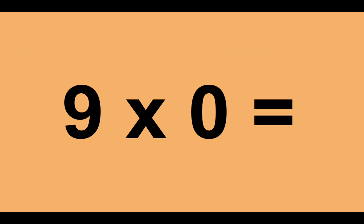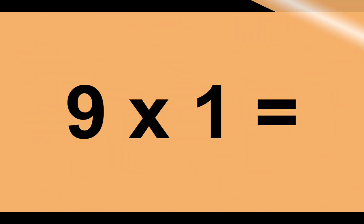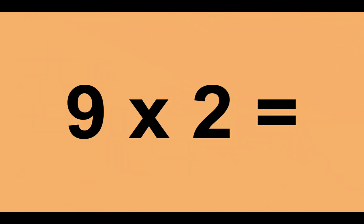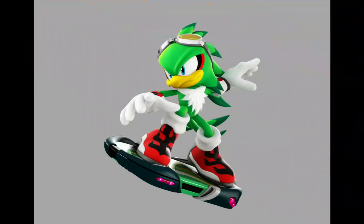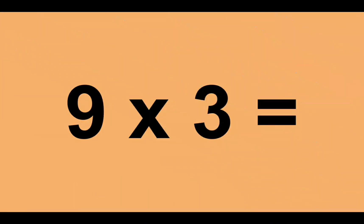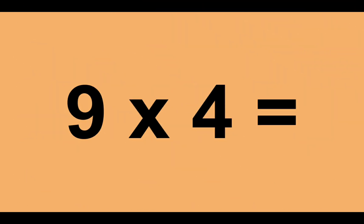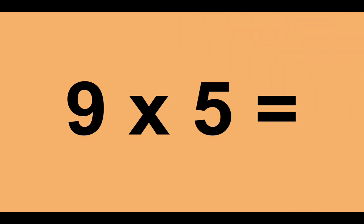Nine times zero equals zero. Nine times one equals nine. Nine times two equals eighteen. Nine times four equals thirty-six. Nine times five equals forty-five.